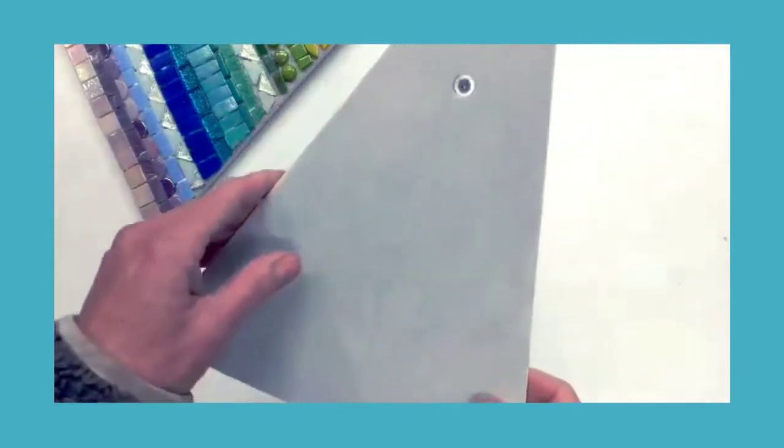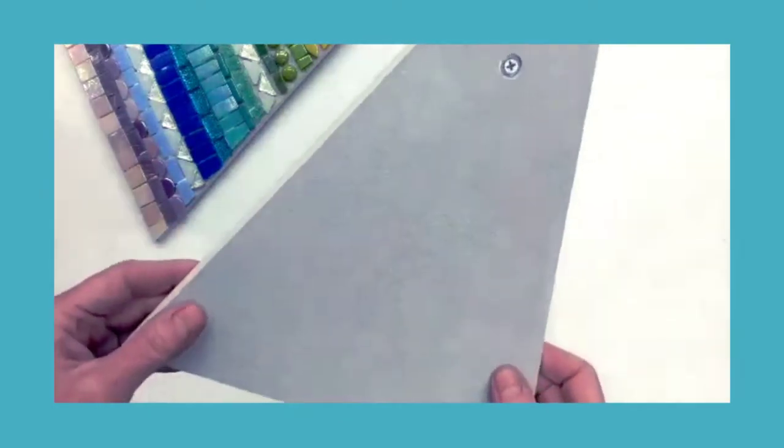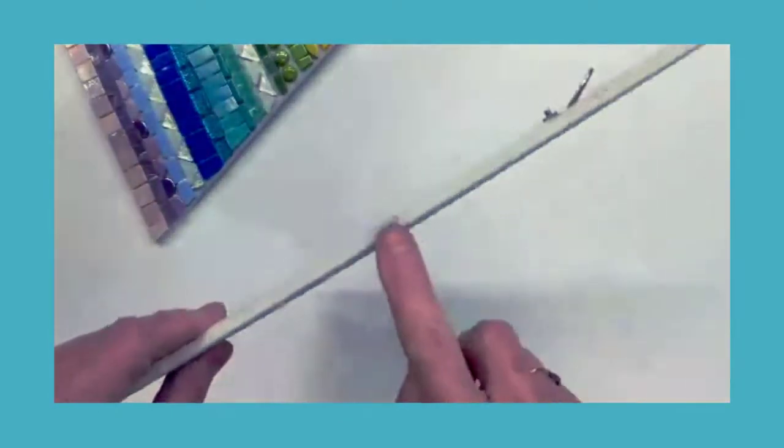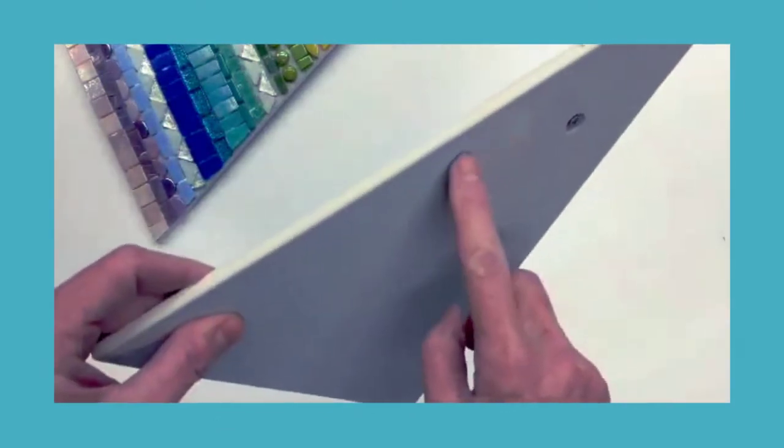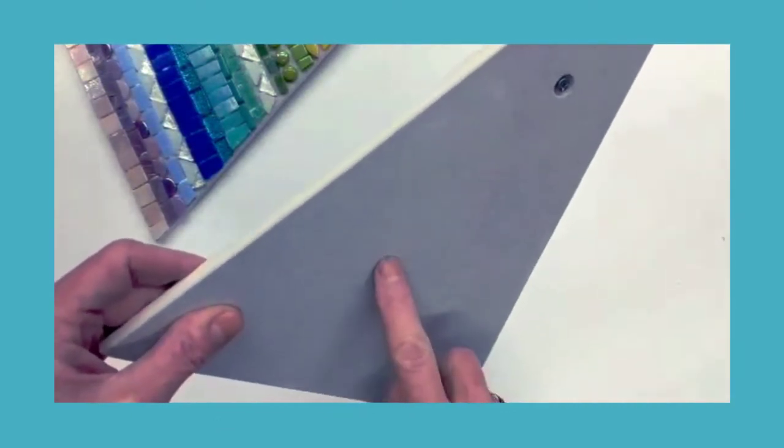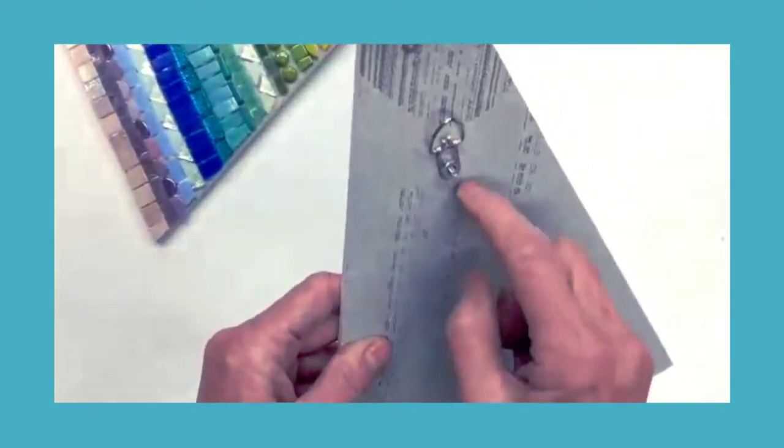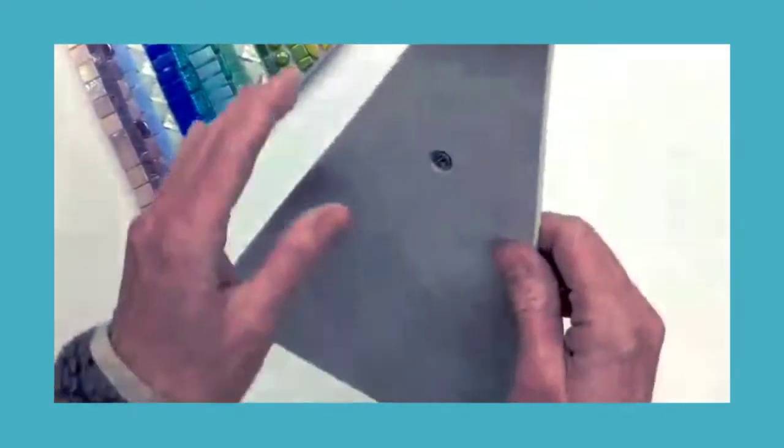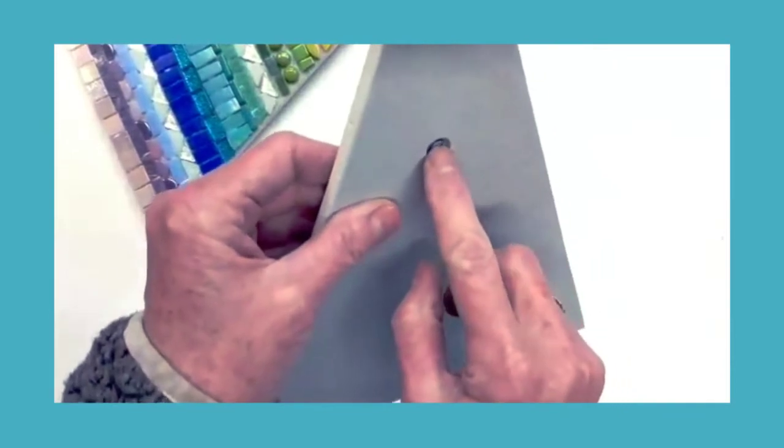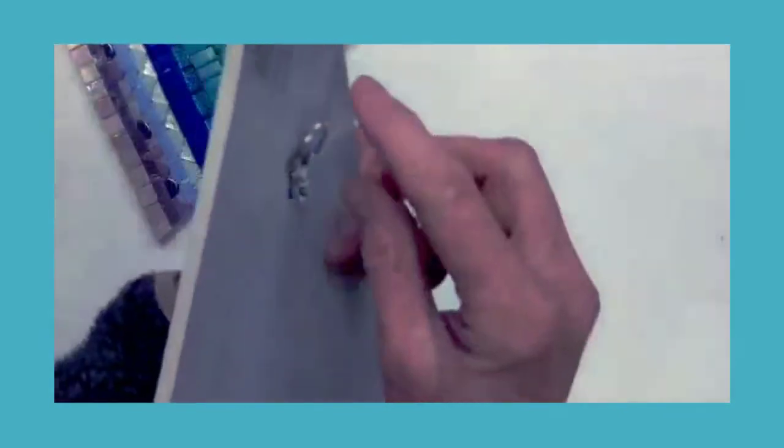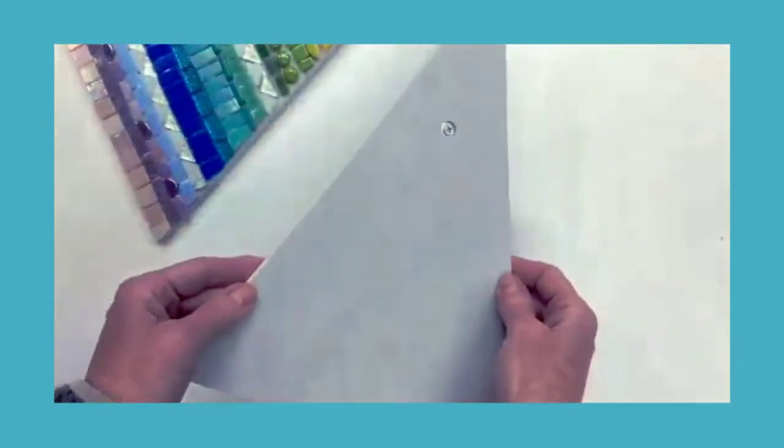So we're using this stuff that I call Go Board. It's a cementous backer board. It's nice and lightweight. It's foam on the middle with a thin layer of cement on either side. You cannot screw into this because it's not like wood, so I've gone ahead and attached the hanger for you with a washer and a nut so you're all ready to go.